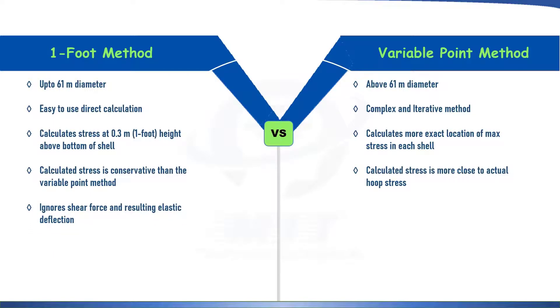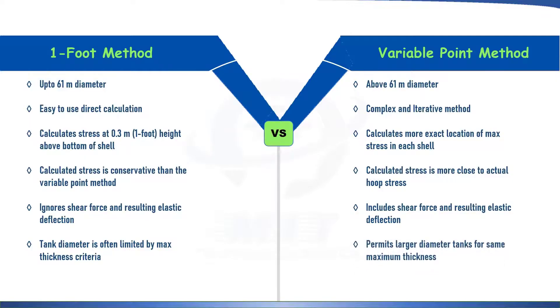One foot method ignores shear force and resulting elastic deflection, whereas variable point method considers it. And in one foot method, the tank diameter is often limited by maximum thickness criteria. But for variable point method, it permits larger diameter tank for the same maximum thickness.